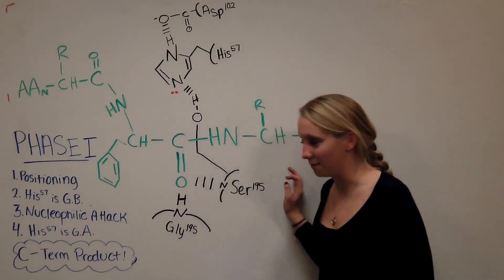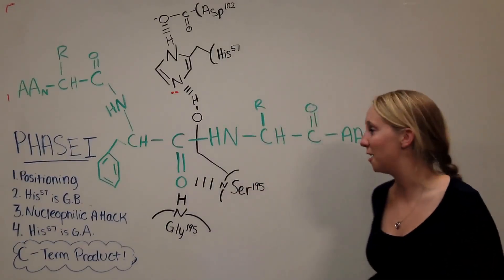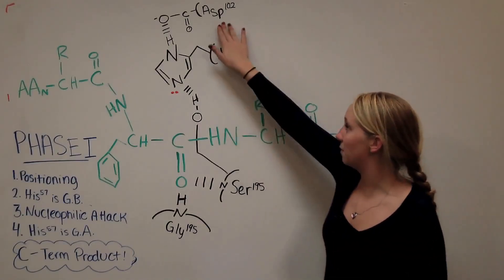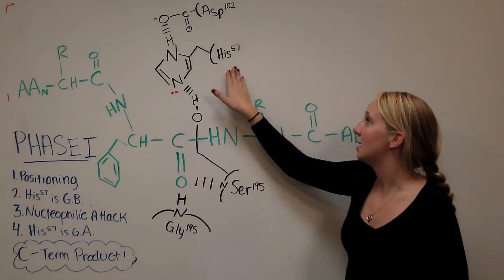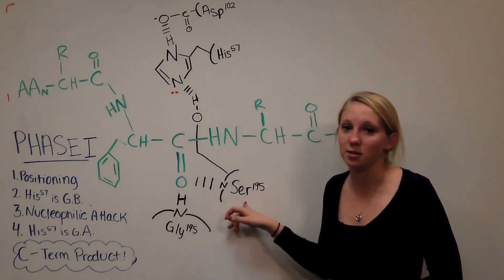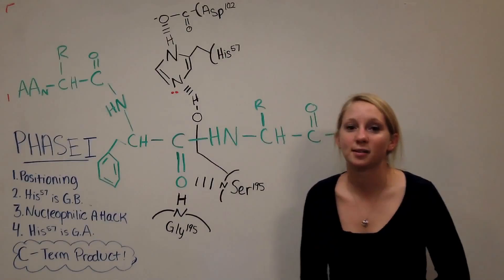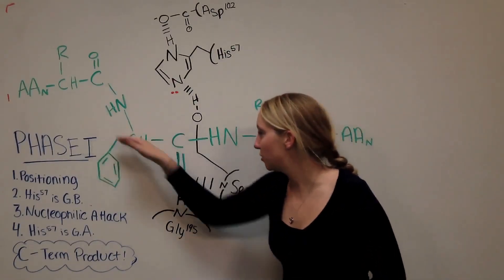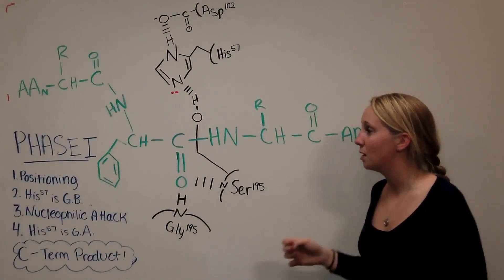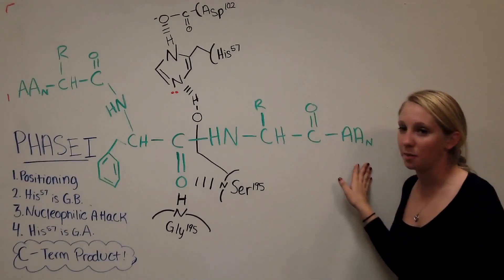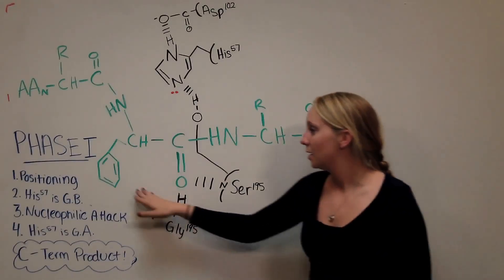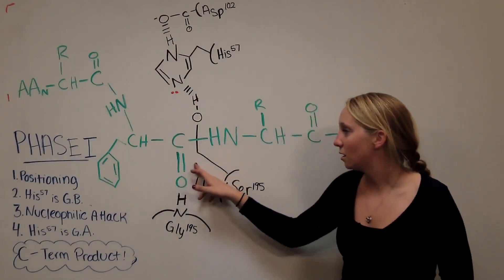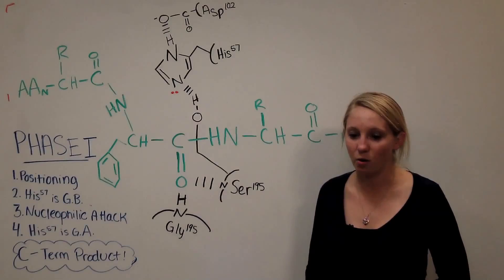Let me orient you to my model. What I've drawn in black is the enzyme chymotrypsin itself, with aspartate-102, histidine-57, and serine-195 residues clearly labeled. These three amino acids make up the catalytic triad, which is essentially the active site of the enzyme. In green I have our generic polypeptide chain, with the N-terminal on one side and C-terminal on the other. The aromatic group sits in what's known as the hydrophobic pocket, and the carbonyl group sits in the oxyanion hole.